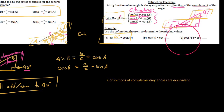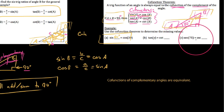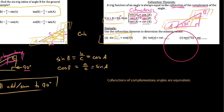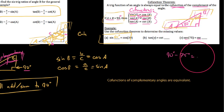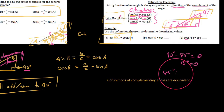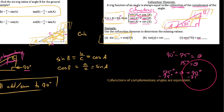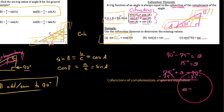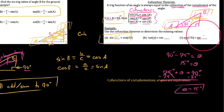Using these co-function laws, let's fill in the practice problems. Starting with part C: the secant of 75 equals the cosecant of what? We ask: what is complementary to 75? Well, 90 degrees minus 75 degrees leaves 15 degrees. So the secant of 75 equals the cosecant of 15, because secant and cosecant are co-functions and 75 and 15 are complementary.